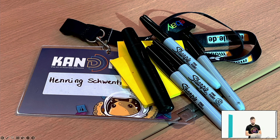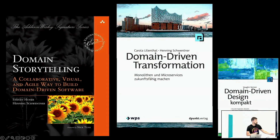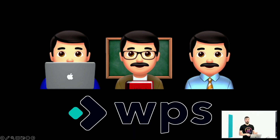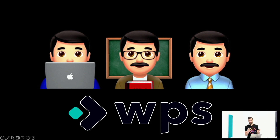Who am I? My name is Henning Schwentner, I'm the guy with the many kids. I'm the author of Domain Storytelling together with Stefan, and also the translator of Vaughn's book Domain Driven Design Distilled, which is called here Domain Driven Design Compact. There's also an upcoming book called Domain Driven Transformation — we will hear more about that later by Carola. I work as a coder, coach, and consultant at WPS. Most of the time currently I'm working with teams on their big piece of software — usually monolithic legacy software that has to be modernized and modularized — and Domain Storytelling is a good means for that.